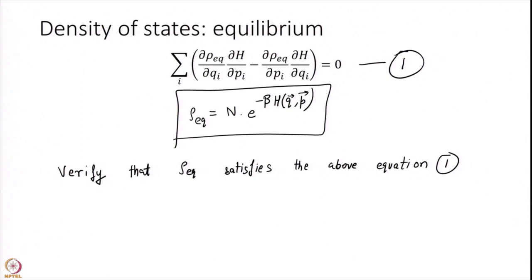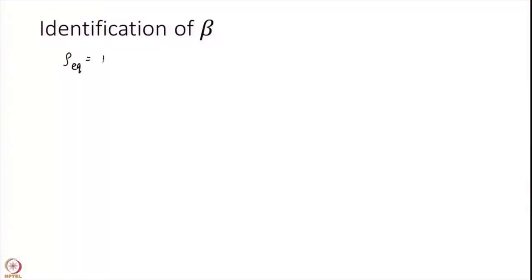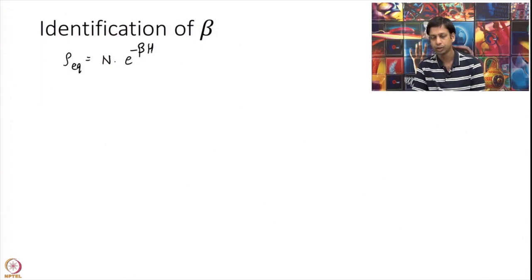You have to substitute rho equilibrium into the above equation, take its derivatives with respect to qi and pi, and show that the sum over i comes out to be 0. So far what we have is rho equilibrium equals N times e to the power of minus beta H, where beta is a constant — I have not yet specified what beta is.